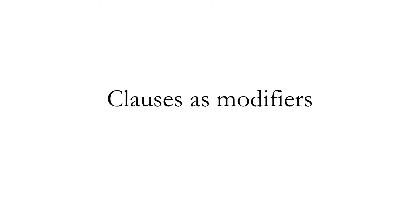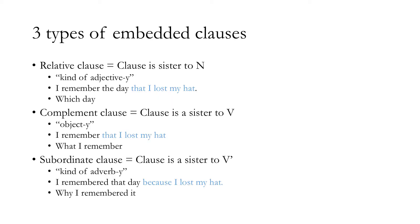These three types of clauses each act as a modifier to a different element in the syntax tree. The first is the relative clause, also known as an adjective clause. This is where a whole clause acts as a sister to an N — it's the modifier of a noun. That's why it's kind of adjective-y.